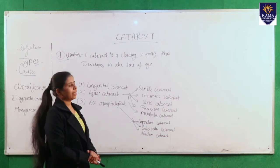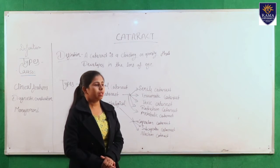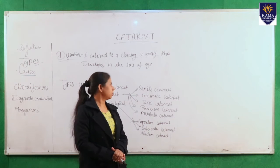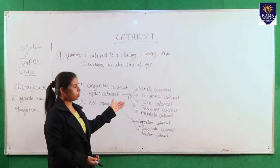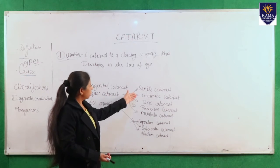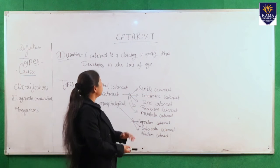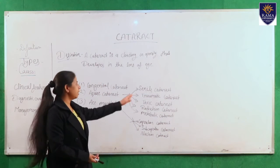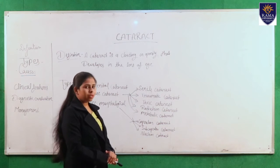Next is acquired cataract. In acquired cataract, the opacification occurs in the lens due to any factor. Acquired cataract is also divided into many types. First is senile cataract — this cataract occurs due to aging factors.